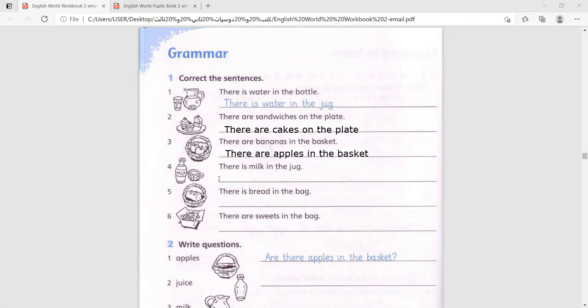Number four: there is milk in the jug. There is milk in the bottle. Number five: there is bread in the bag. No, this is a basket, so we say there is bread in the basket.